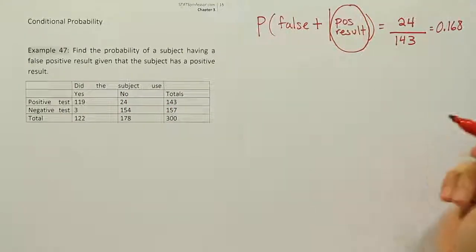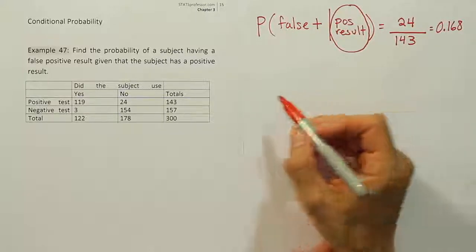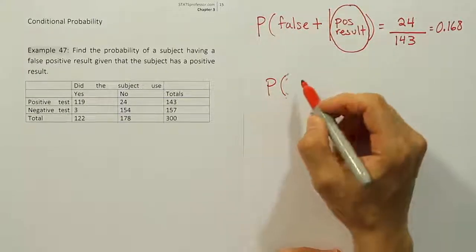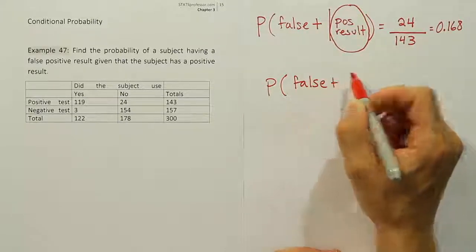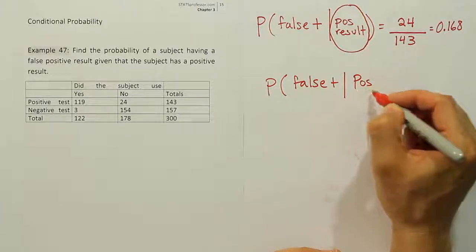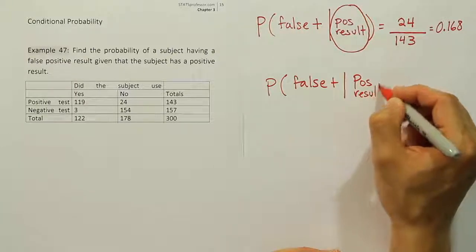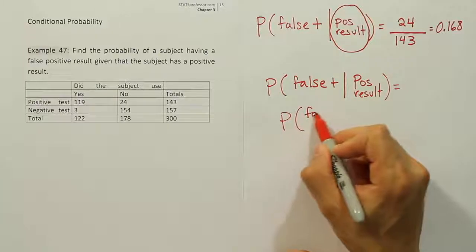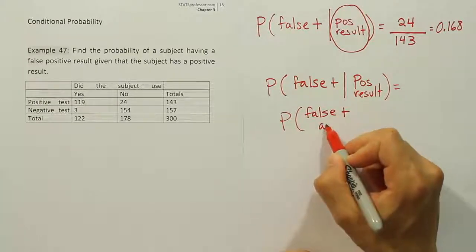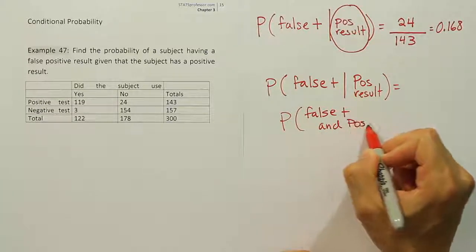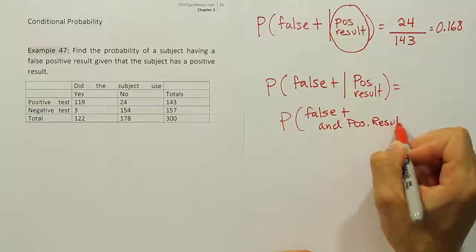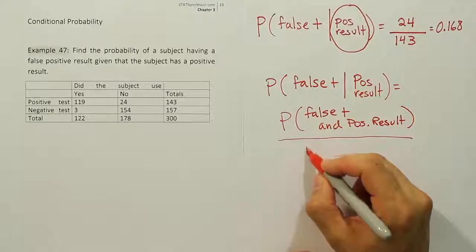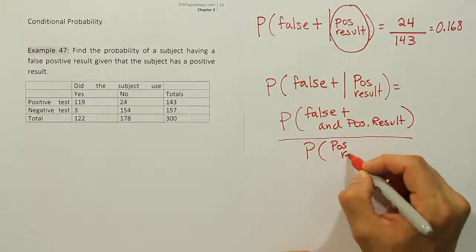Now, had we wanted to use the proper formula, we would have actually used this set of notation. We would have done probability of false positive, given positive result, just like we did before, right? But then we would have had to set up a fraction that says probability of false positive and positive result, divided by the bottom part, which would have been probability of a positive result.